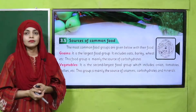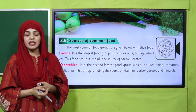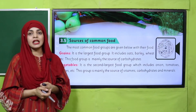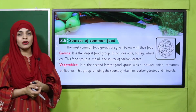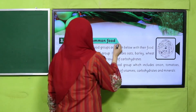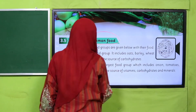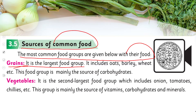I hope everybody has opened the pages. Now let's start reading — put your fingers where I read. 'Sources of Common Food: The most common food groups are given below with their foods. Grains — it is the largest food group and includes oats, barley, wheat, etc.'